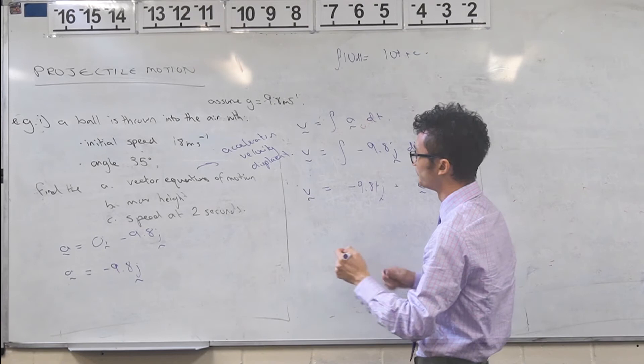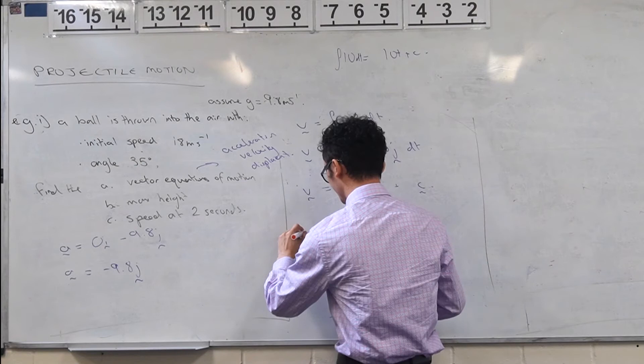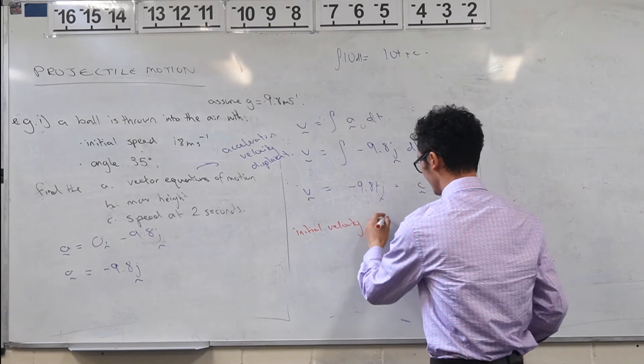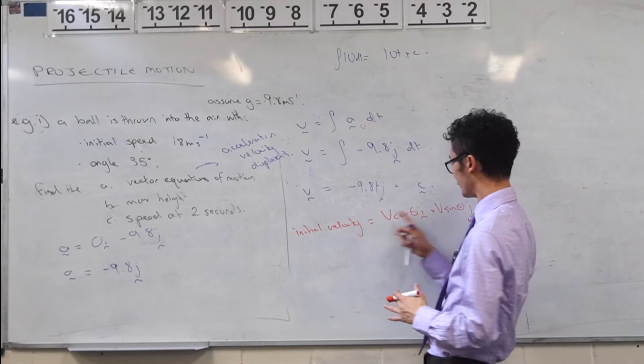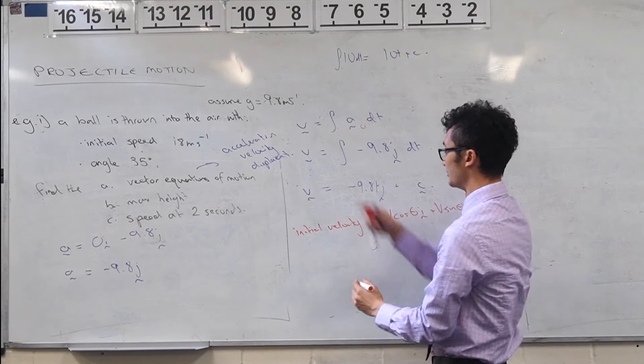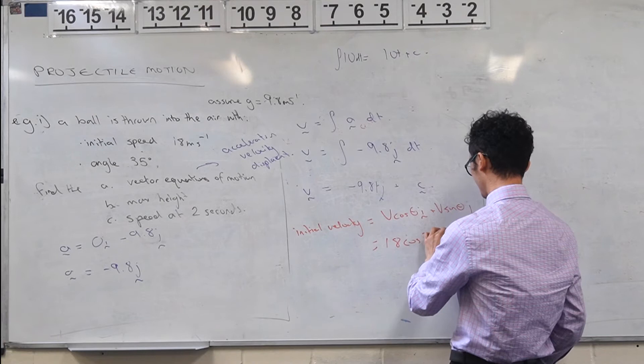You're allowed to assume that the initial velocity is equal to v cos theta i plus v sine theta j. And in this case, obviously, we actually have these values for v and theta. v is the initial speed, theta is the angle that you're launching at. So it's going to be 18 cos 35 plus 18 sin 35.